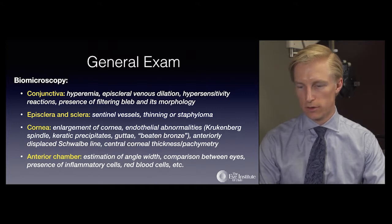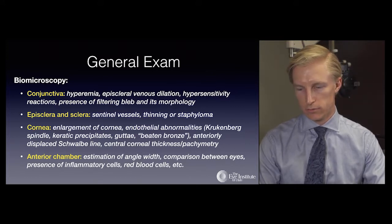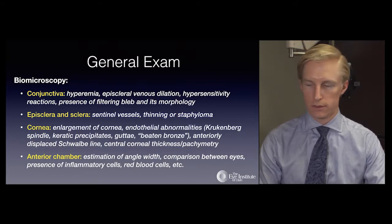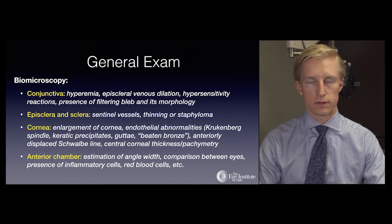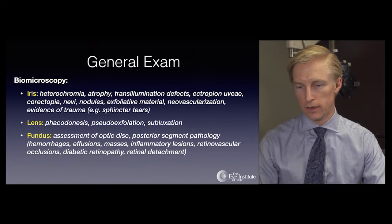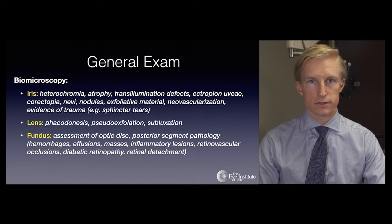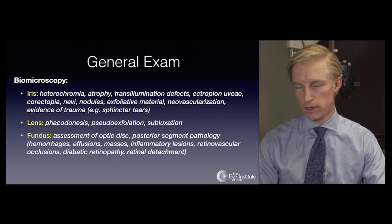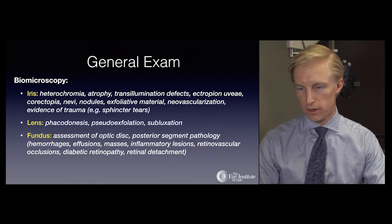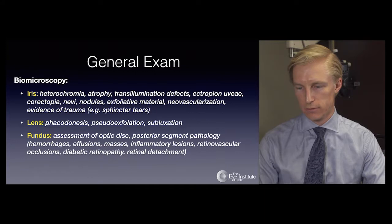Examination of the anterior chamber includes estimation of angle width, comparison between the two eyes, and presence of any inflammatory cells, red blood cells, or other material. Examination of the iris looks at heterochromia, areas of atrophy either generally or sectorally, transillumination defects both peripherally and centrally, ectropion uveae, corectopia, iris nevi, nodules, exfoliative material, neovascularization, or any evidence of prior trauma such as a sphincter tear.